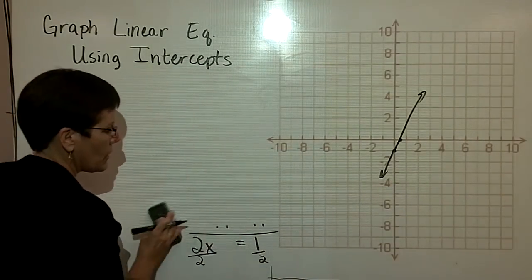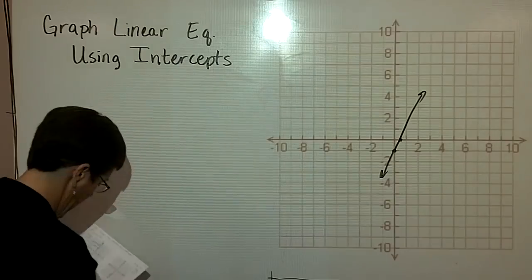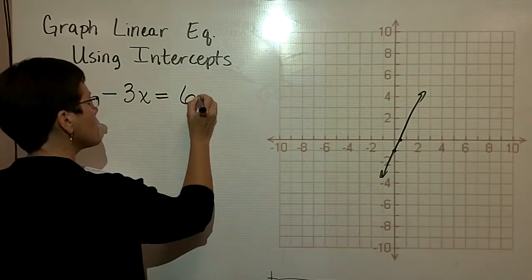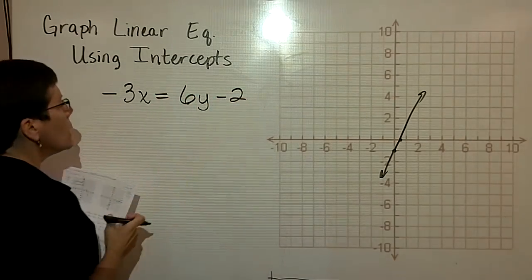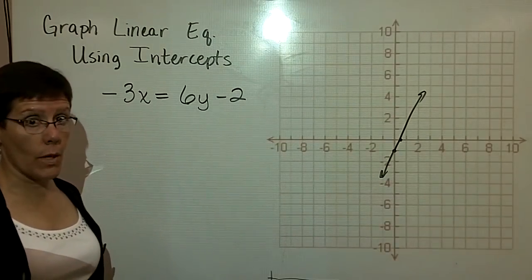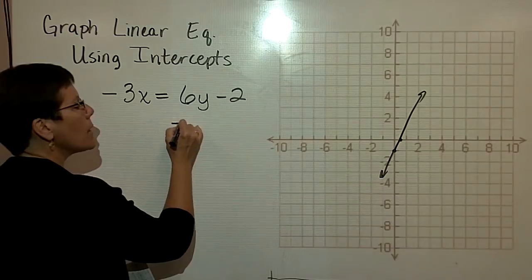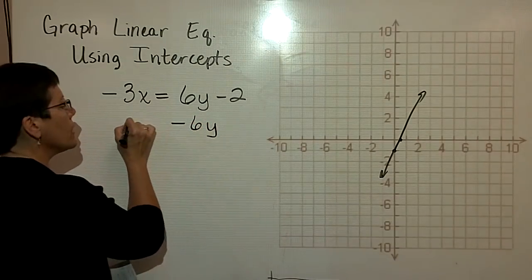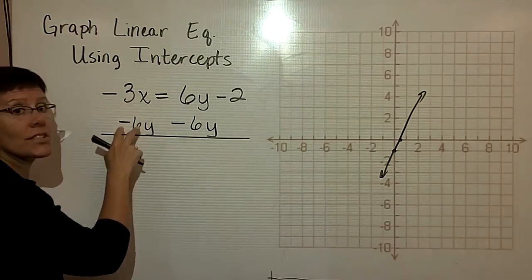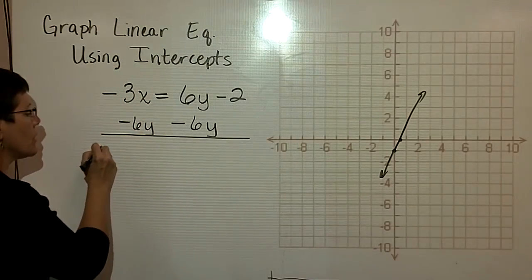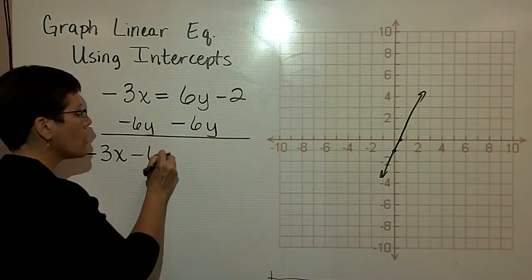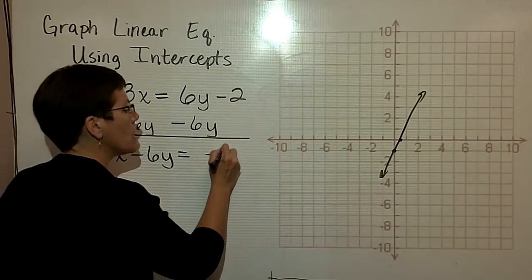And then finally, I'd just like to share with you, using the intercept method, if I have a problem like this one, I sometimes find it a little bit easier to have my x and y terms on one side and my constant on the other. So I'm going to subtract 6y from both sides of this equation. I kind of hate to put that right underneath the 3x because they're not like terms. But I just want you to see, therefore, that on the left I'd have a negative 3x minus the 6y, so I'll just put them horizontally now, equals a negative 2.